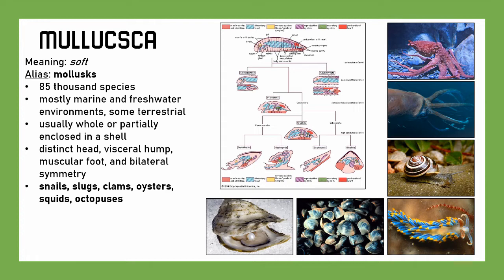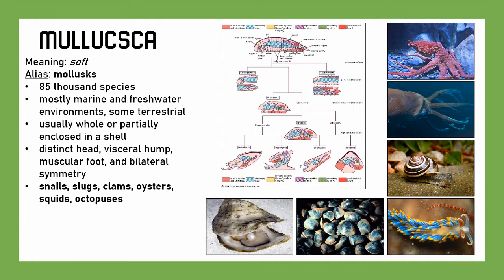Next, we have Chordata, which means 'with a cord.' Another way to say this is they're vertebrates and related relatives. There are 55,000 species, found in all sorts of environments: marine, freshwater, and terrestrial. The big features that make them chordates: they have a notochord, a dorsal nerve cord, a post-anal tail, gill slit openings, and an endostyle. These include things not quite vertebrates, like lancelets, sea squirts, and lamprey, and the actual vertebrates: sharks, bony fish, and then tetrapods — amphibians, reptiles, birds, and mammals.